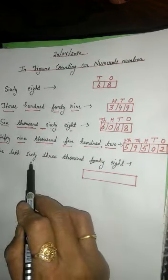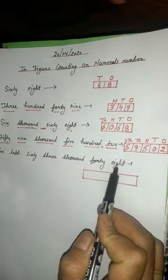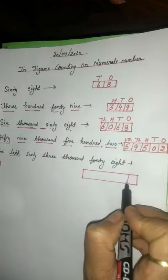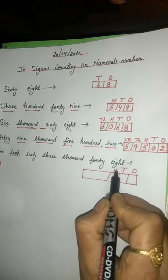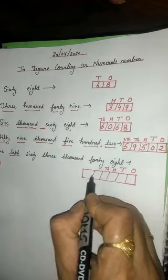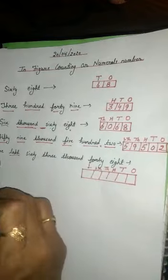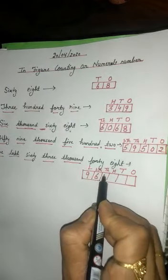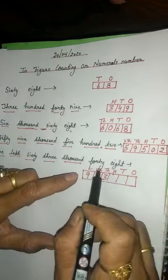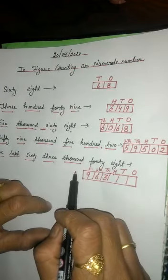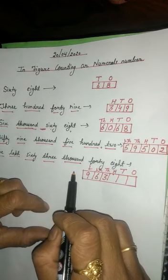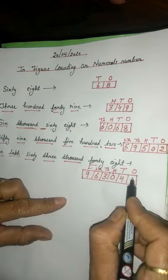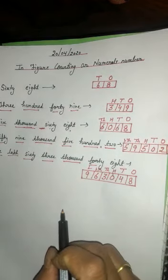Next example: 9,063,048. We will write the place value up to 1,000,000. I hope you understand. Thank you.